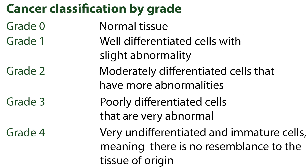Cancers can also be classified by grade, in which the cancer is examined for its cellular maturity and characteristics. Cells that are undifferentiated are highly abnormal or immature and primitive with respect to surrounding tissues. Grade 0 is normal tissue. Grade 1 is well-differentiated cells with slight abnormality. Grade 2 is moderately differentiated cells with more abnormalities. Grade 3 is poorly differentiated cells that are very abnormal. Grade 4 is very undifferentiated and immature cells, meaning there is no resemblance to the tissue of origin.